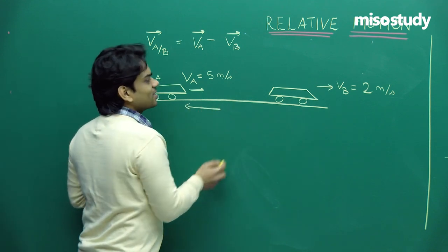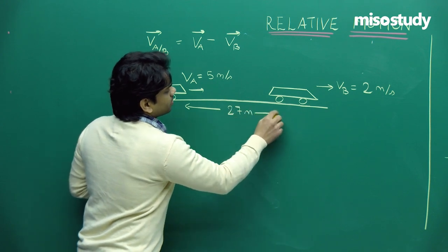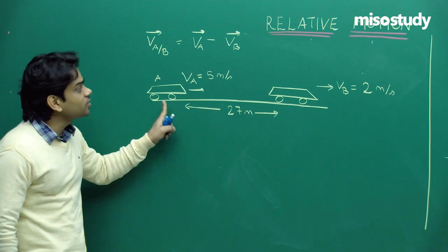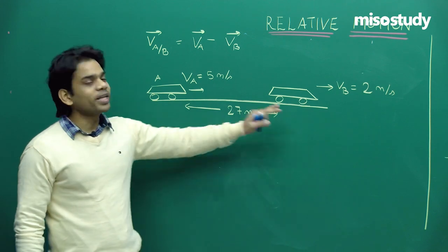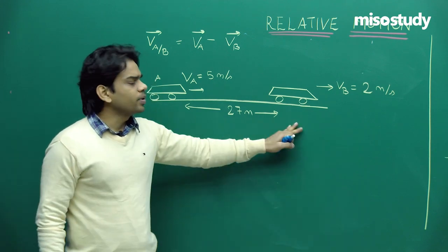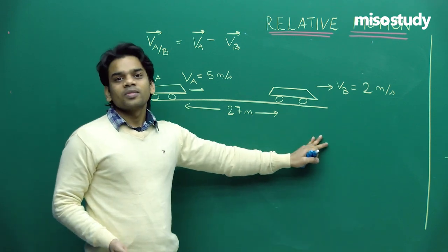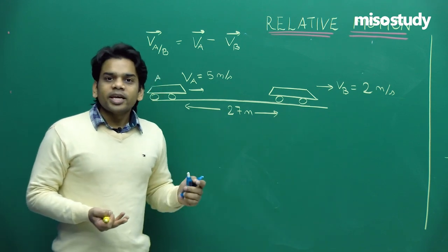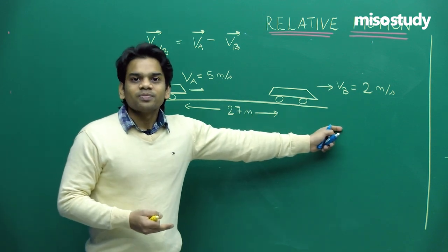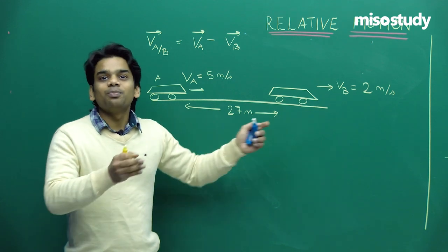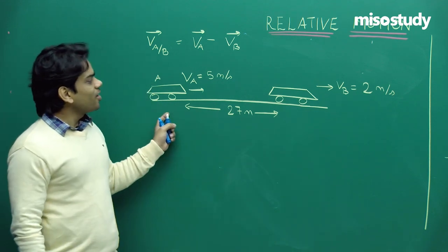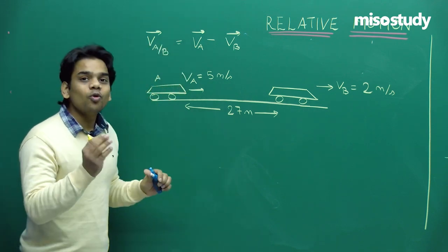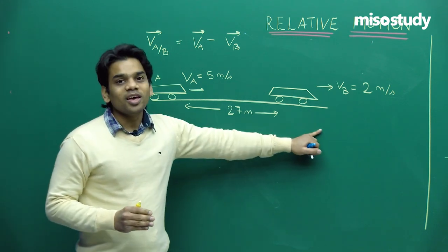The separation between the two cars is 27 meters. Car A has a higher velocity than car B, so there will be an instant when car A overtakes car B. Using basic algebra, you could let time t be when car A overtakes car B, compute distances, and set distance by A equal to 27 plus distance by B. But let's use the shortcut method via relative velocity.